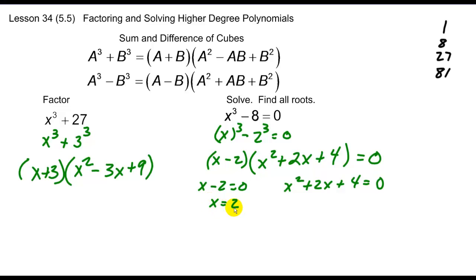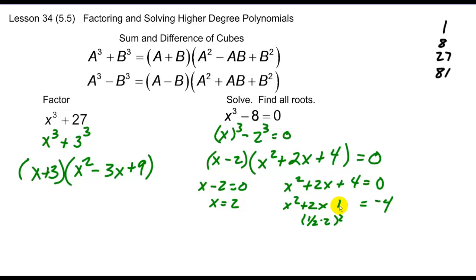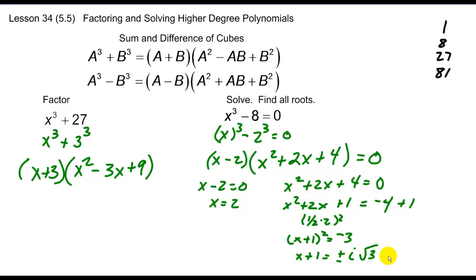If two numbers multiply to equal 0, then one possibility is x minus 2 equals 0, or x squared plus 2x plus 4 equals 0. In this case, x is just equal to 2. And in this case, notice I can't find what multiplies to 4 and adds to 2 — it doesn't work. So I've got to either use completing the square or quadratic formula. Since I've got a nice even term here, I'll complete the square. So this is x squared plus 2x; I bring my 4 over which goes negative. Take half of 2 and square it, which gets me a 1. Add that to both sides. I have the quantity of x plus 1 squared equals negative 3. Square root both sides: x plus 1 equals plus or minus i root 3. Therefore, x equals negative 1 plus or minus i root 3.